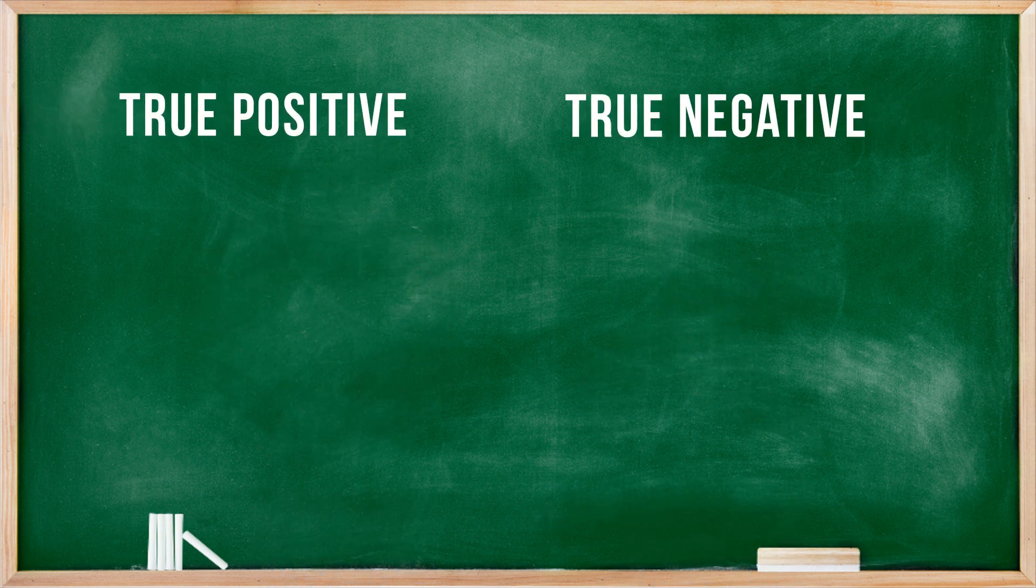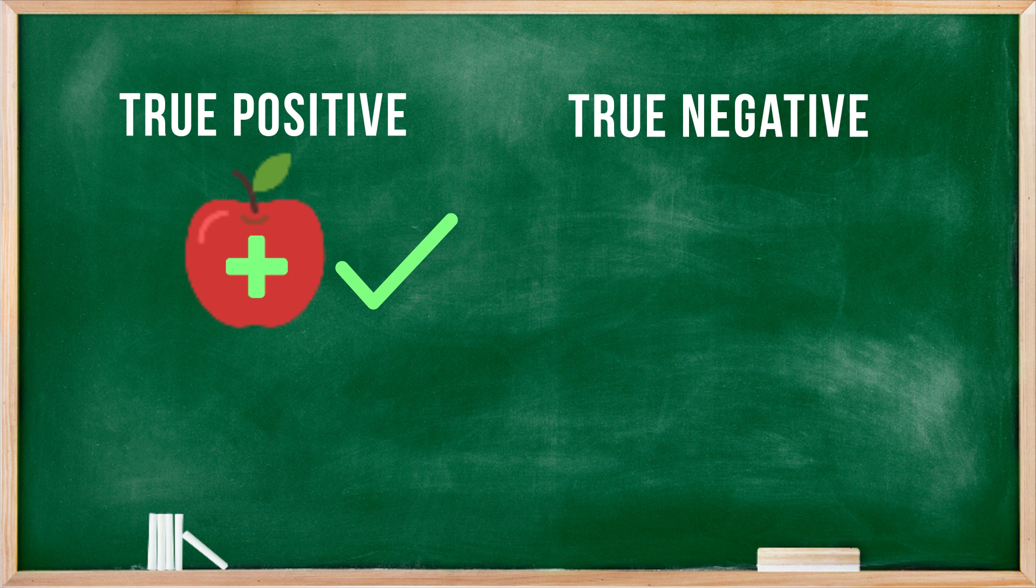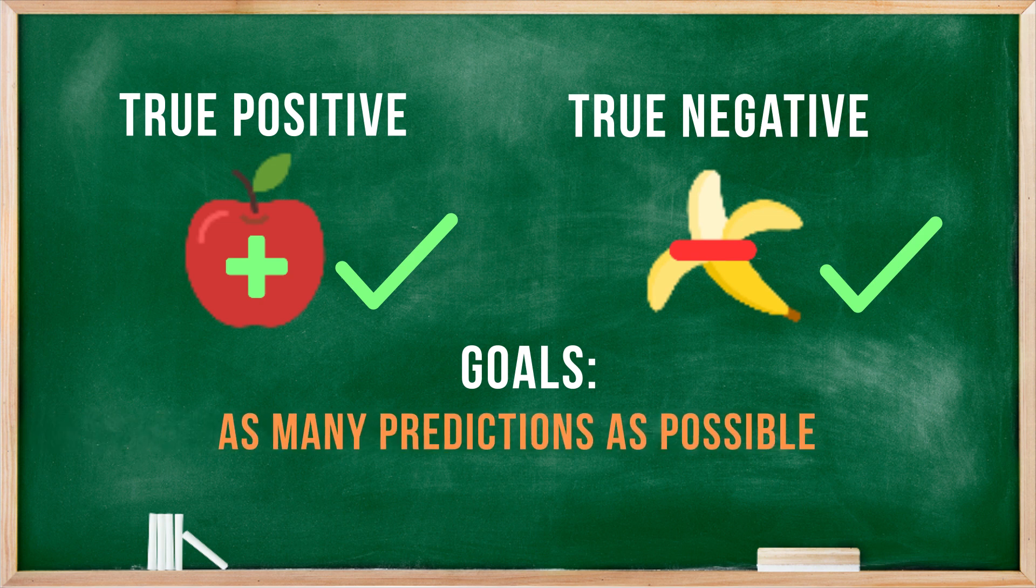So then a true positive and a true negative is a positive class A correctly predicted as class A and negative class B correctly predicted as B. We want to get as many predictions of A and B as possible, aiming for more trues rather than falses.